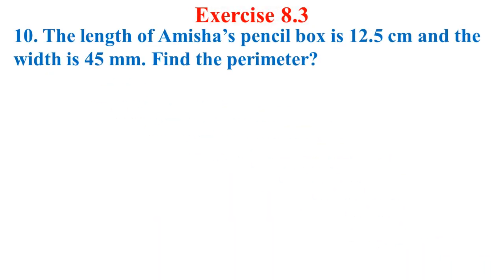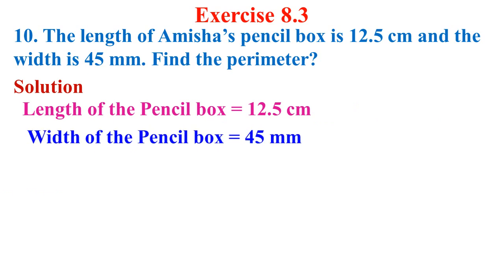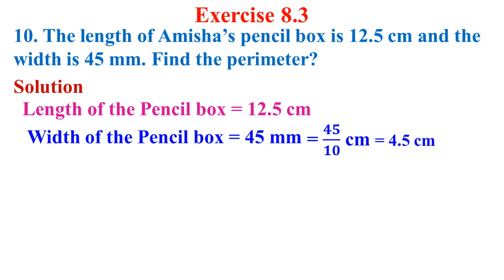Tenth one: the length of Amisha's pencil box is 12.5 cm and the width is 45 mm. Find the perimeter. Solution: length of the pencil box equals 12.5 cm. Width of the pencil box equals 45 mm. We want to convert into centimeter: 45 divided by 10 cm equals 4.5 cm.